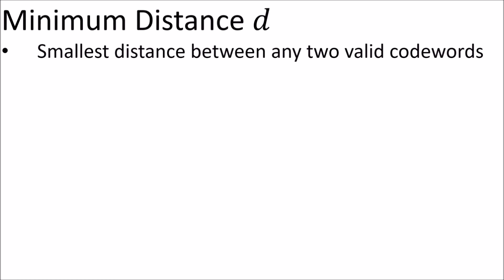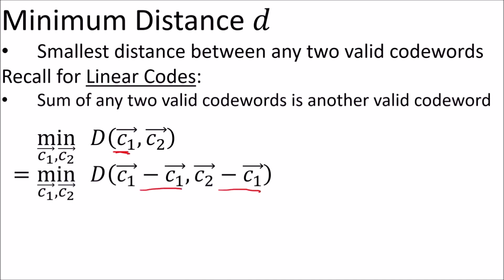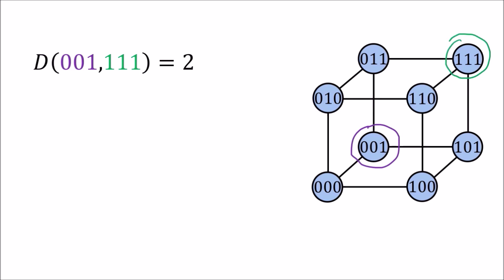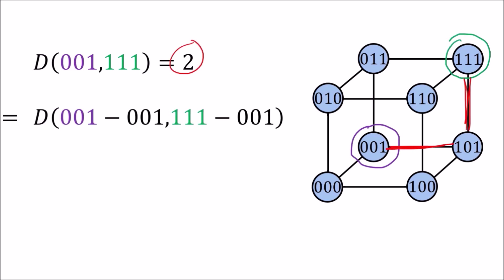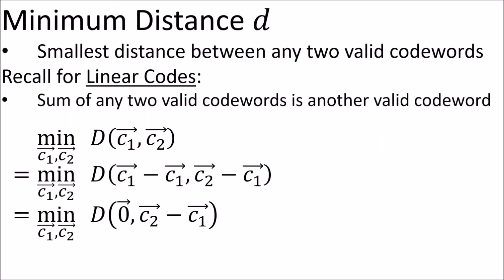So if we're looking for the minimum distance over all valid code word pairs, we can take the Hamming distance function and subtract the code word c1 from both inputs. This won't change the resulting distance we get, since by subtracting a code word we're basically just sliding valid code words over in space without changing the distance between them. So the minimum distance is really equal to the smallest distance between zero and c2 minus c1.